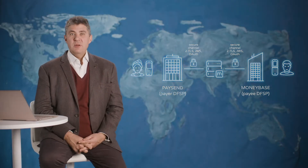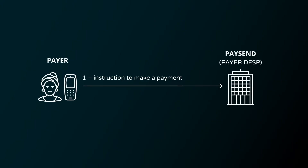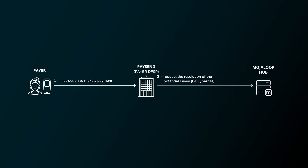With that structure in mind, we will now explore exactly what happens when Gladys sends money to John. It begins with Gladys entering the identifier for John and the amount of money — 1000 shillings — she wants to send to him. In response, PaySend requests to look up John and whichever DFSP in the system has his account. That request goes through the ALS and the identity oracle for the type of identifier Gladys has entered, whether that's a phone number, national identity, or some other type of account identifier.